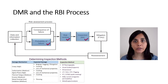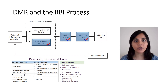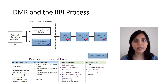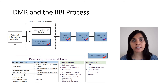For example, general corrosion, pitting, cracking, etc. In addition, it provides information on where to inspect based on susceptible locations for damage. Finally, mitigation recommendations may be made during the DMR process in order to manage or reduce the risk.